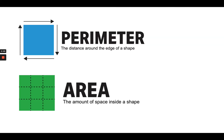So remember, as you work these problems with area and perimeter: perimeter is the distance around the edge of the shape, and area is the amount of space inside the shape.